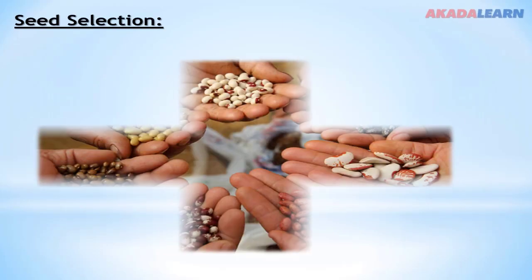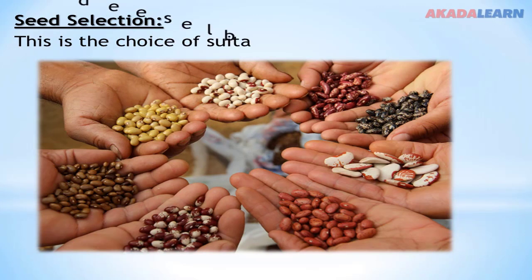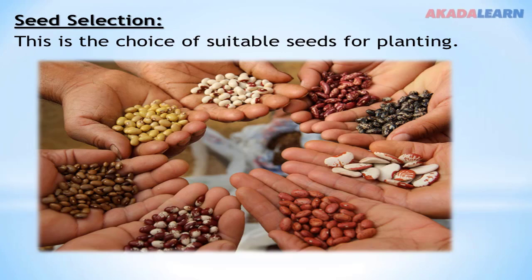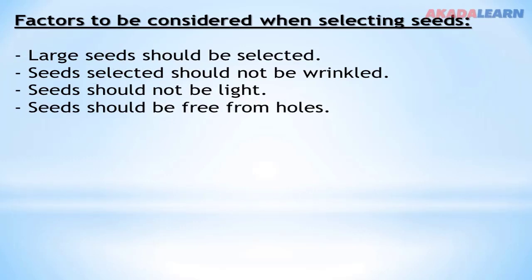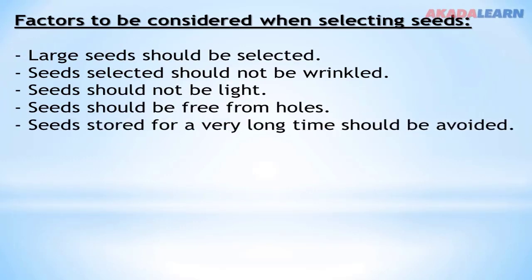Seed selection. Seed selection is the choice of suitable seeds for planting. A farmer is not expected to plant any kind of seed; the seed to be planted must be a suitable, healthy seed, free from disease. Factors to consider when selecting seeds: large seeds should be selected; selected seeds should not be wrinkled; seeds should not be light — they should be heavy; seeds should be free from holes; and seeds stored for a very long time should be avoided, because there is a possibility of them losing their viability.